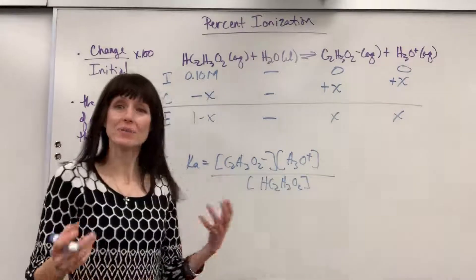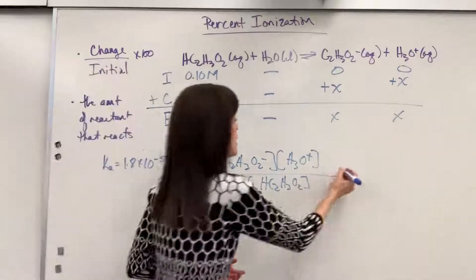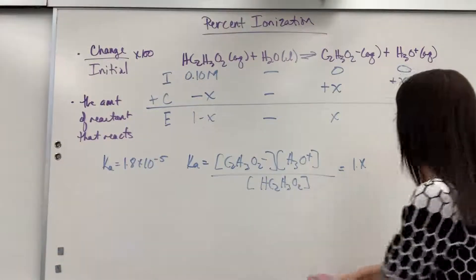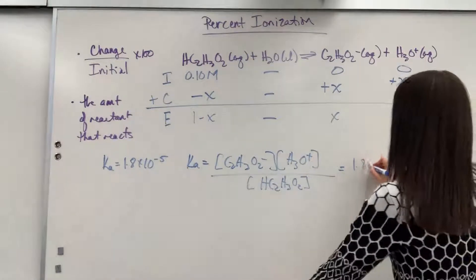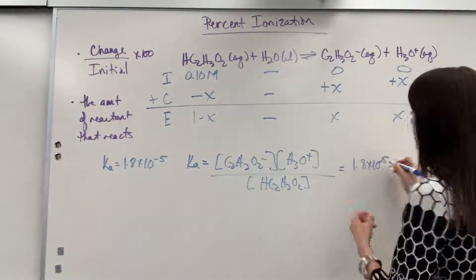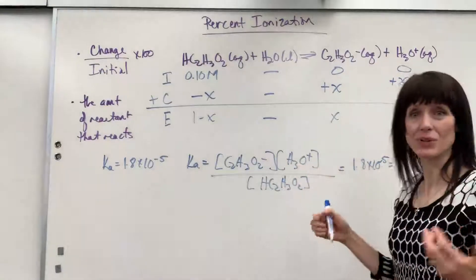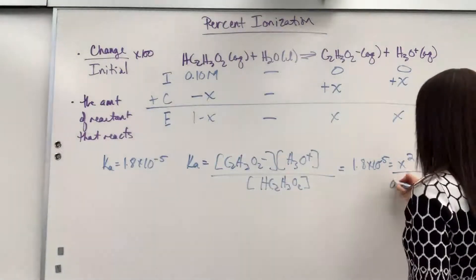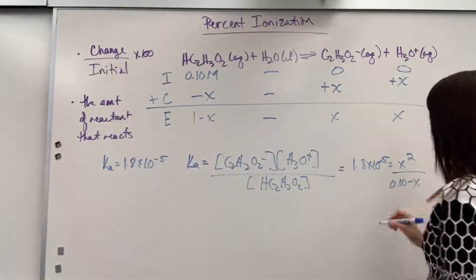Now let's go ahead and plug in what we know. We are going to have 1.8 times 10 to the minus 5 equals, so I've got x and x. I'm going to go ahead and multiply those. Equals x squared divided by my reactant, 0.10 minus x.